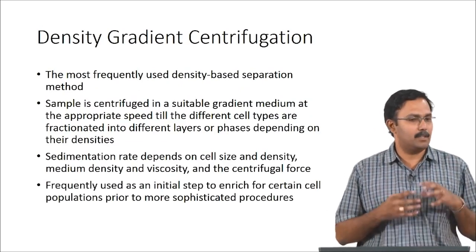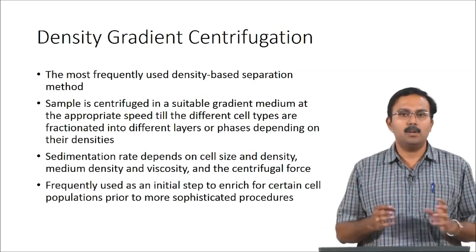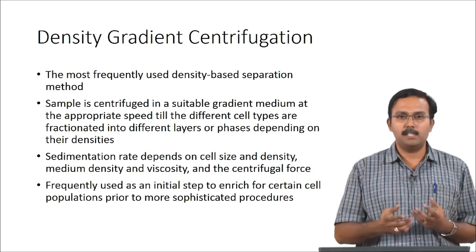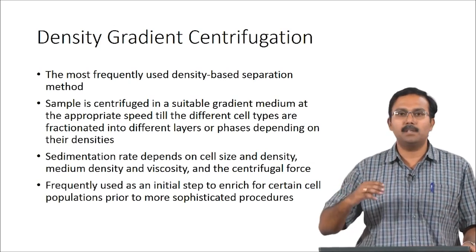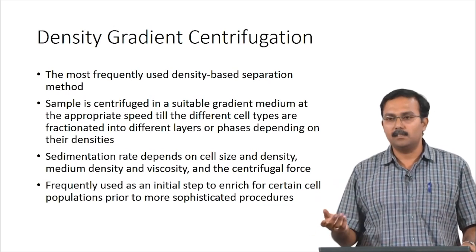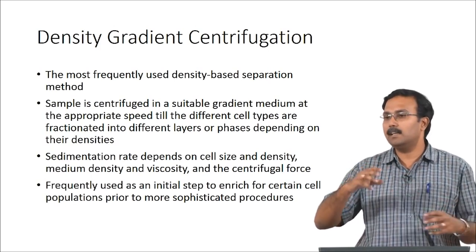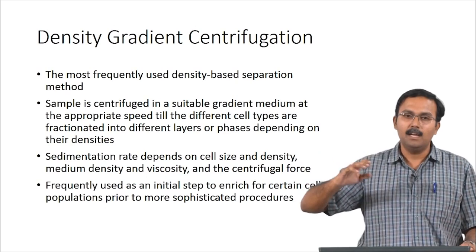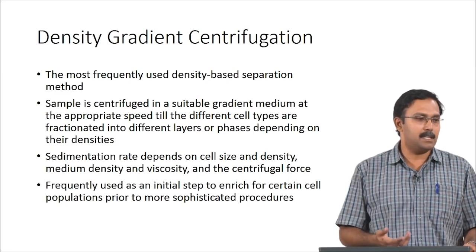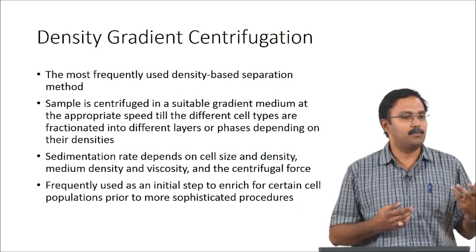Gradient centrifugation, or density gradient centrifugation, is the most frequently used density-based separation method. A sample is centrifuged using a suitable gradient medium at an appropriate speed until the different cell types are fractionated into different layers or phases depending on their densities. The medium contains molecules of different densities which align themselves, and the cells also align with their matching density. The sedimentation rate depends on cell size and density, the medium density and viscosity, and the centrifugal force used.